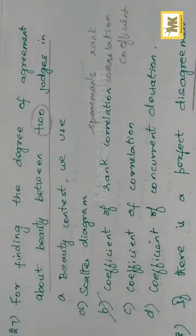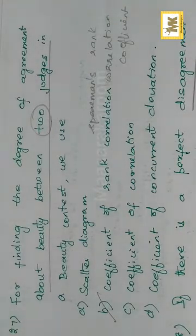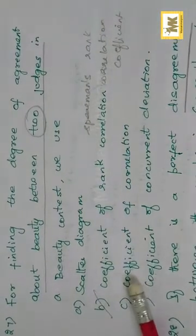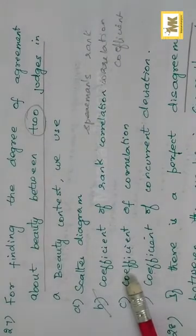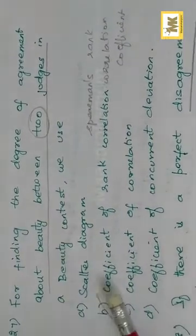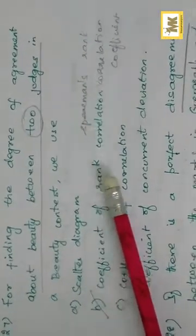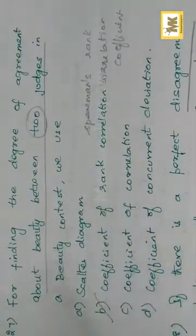For finding the degree of agreement about beauty — beauty is a quality attribute. What we use to measure rank-based quality is rank correlation — Spearman's Rank Correlation Coefficient is the right answer.